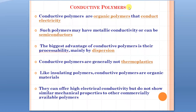Conducting polymers are generally not thermoplastics, whereas insulators are thermoplastic. Like insulating polymers, conducting polymers are organic materials. These conducting polymers can offer high electrical conductivity but do not show similar mechanical properties to other commercially available polymers.